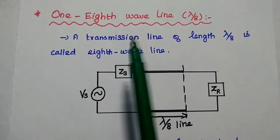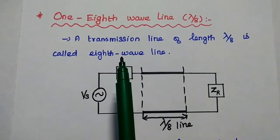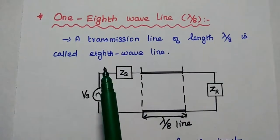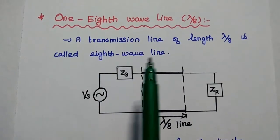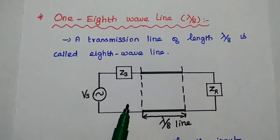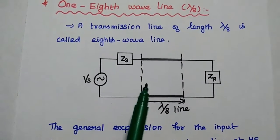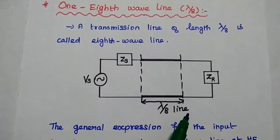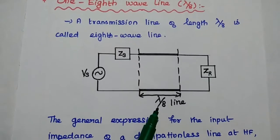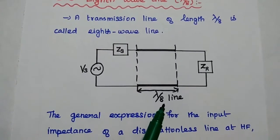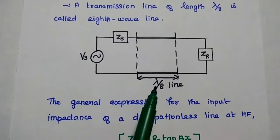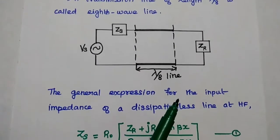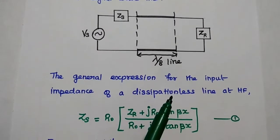Let's discuss the one-eighth wave line method. A transmission line of length lambda by 8 is used in this method. We use a transmission line of length λ/8 as a matching device, connecting it in between the source and the destination to achieve impedance matching.